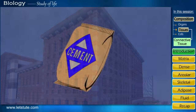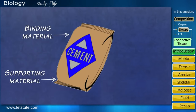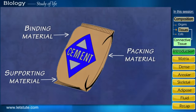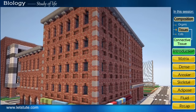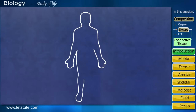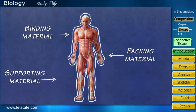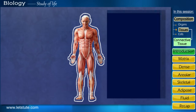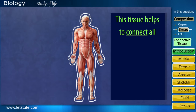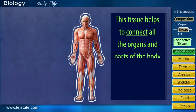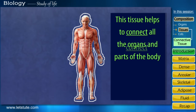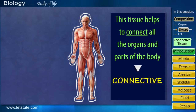Cement acts as a binding, supporting, and packing material. So just like a building, there's a cementing material in our body too, in the form of a special tissue which helps to bind the body together. This tissue helps to connect all the organs and parts of the body, and hence it is rightly named as connective tissue.